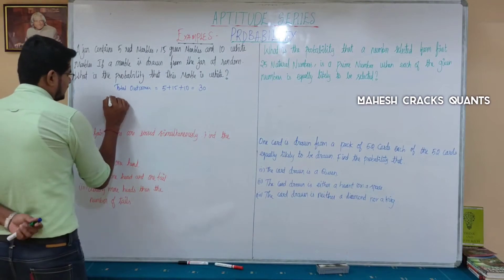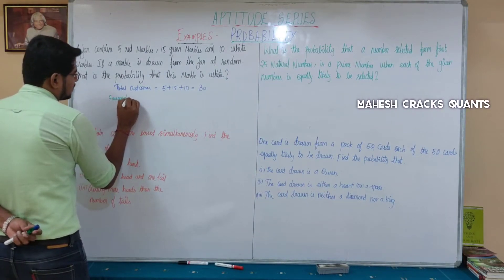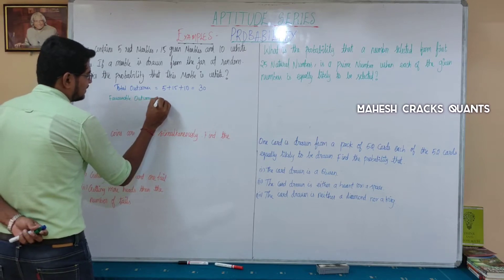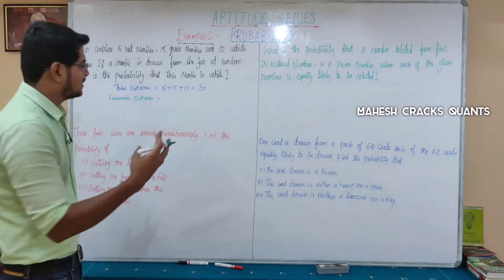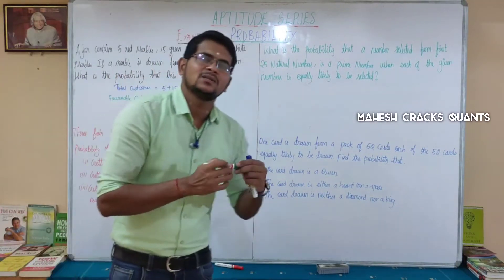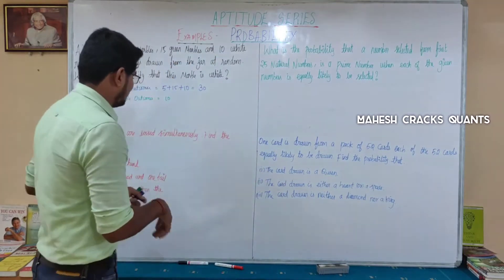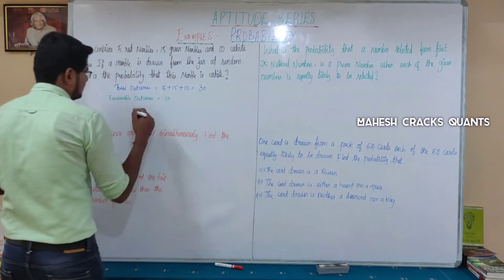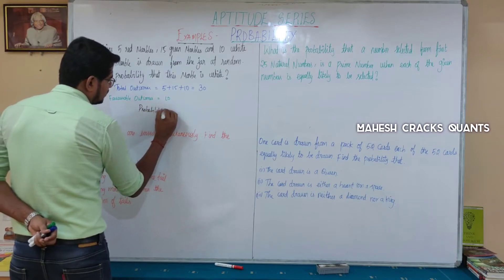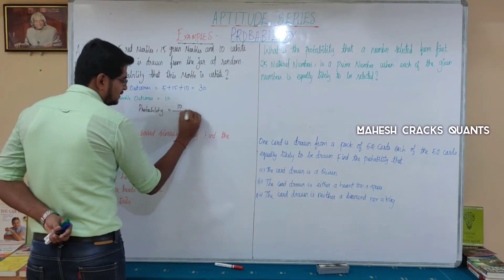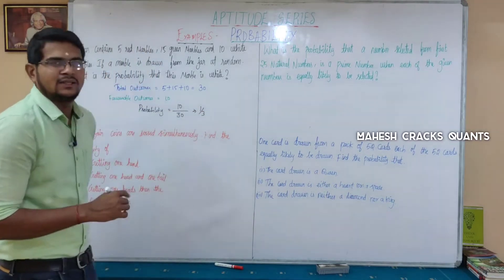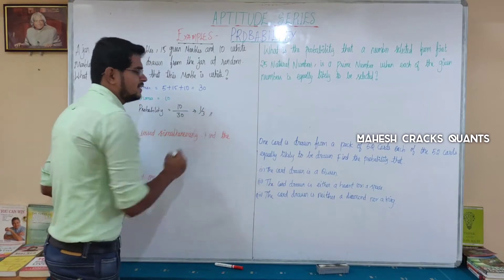What is the favorable outcome? We want white marbles — there are 10 white marbles. So the favorable outcome is 10. Favorable is 10 divided by total 30. If you cancel this, 10 by 30 simplifies to 1 by 3. The probability of drawing a white marble is 1/3.